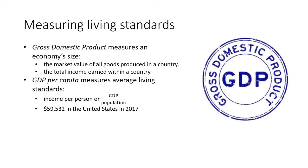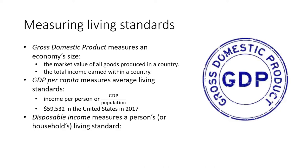In the United States in 2017, GDP per capita was $59,532 in 2020 dollars. In 2019 it would be a little higher than that, and in 2020 it's still too early to tell.